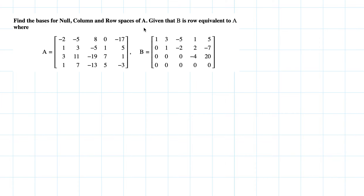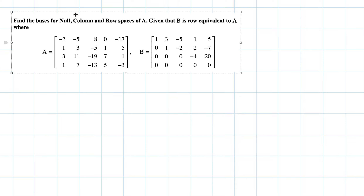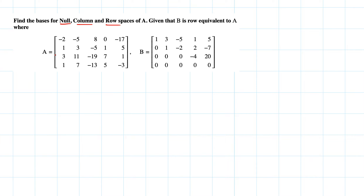We need to find the basis for the null space, column space, and row space of matrix A, given that matrix B is row equivalent to A. B is in row echelon form, so we can identify pivots here. The null space requires some work, but the column and row space bases can be found faster.